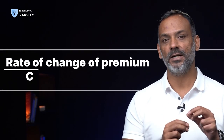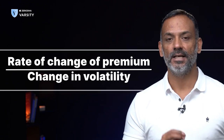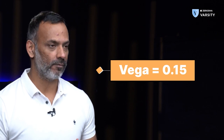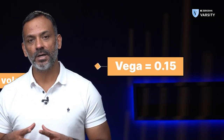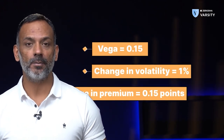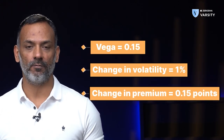The premium is deeply associated with the volatility. The rate of change of premium with respect to change in volatility is captured by the vega of an option. For example, if the vega of an option is 0.15, then for every one percentage point change in volatility, the premium is expected to change by 0.15 points.